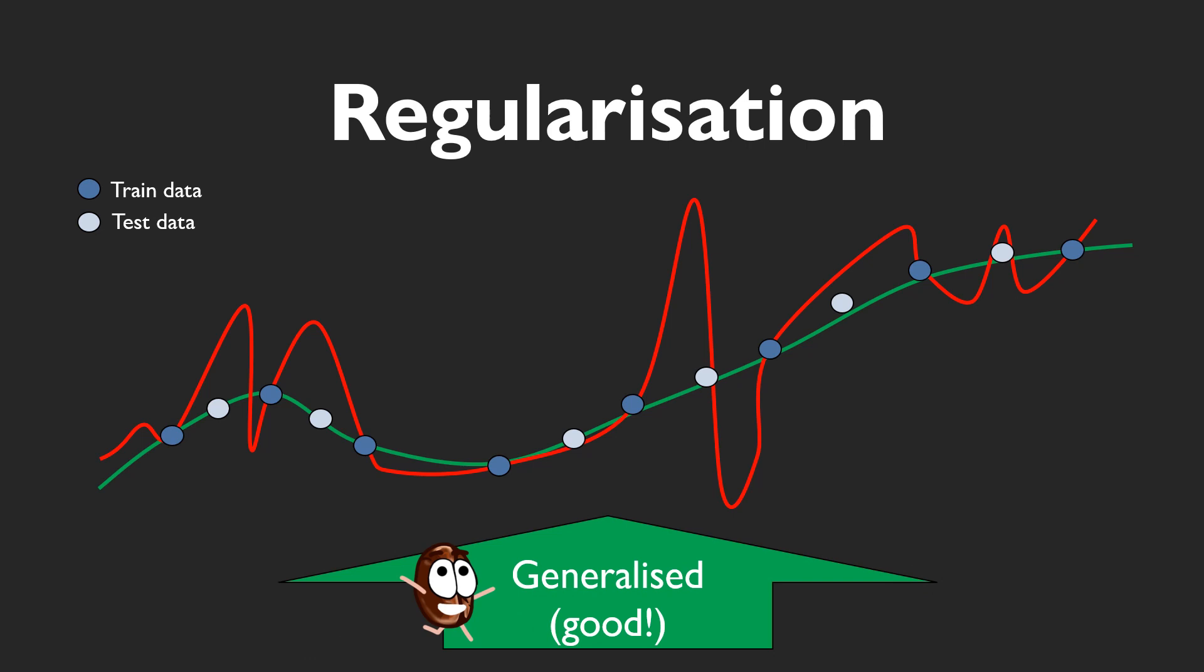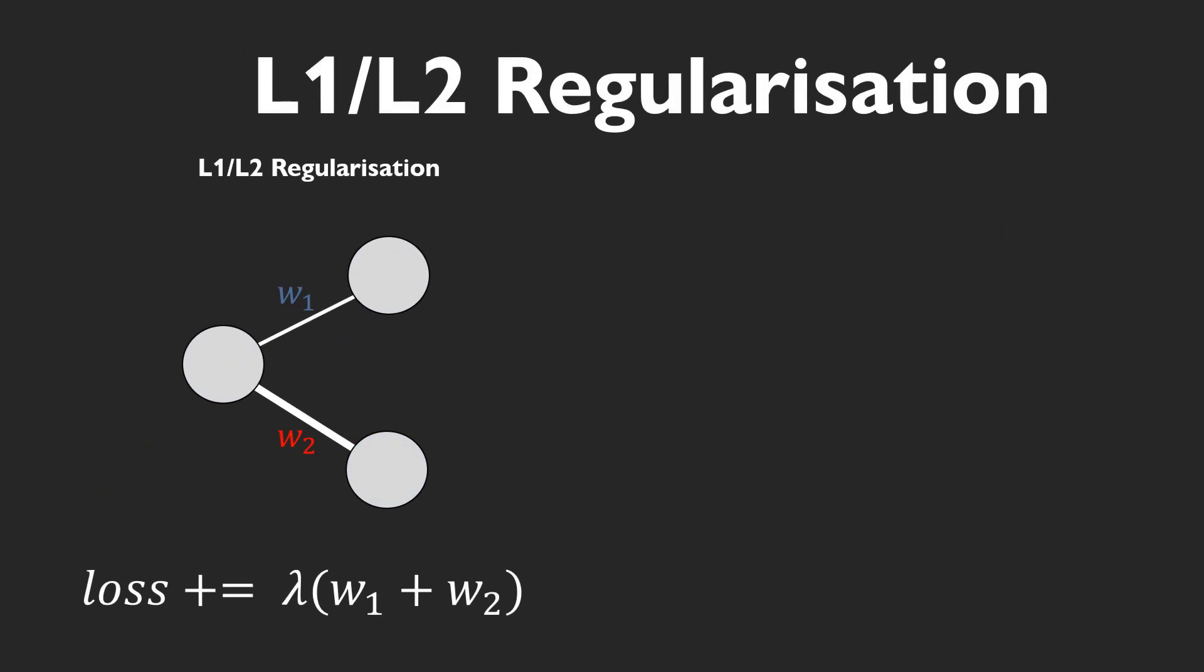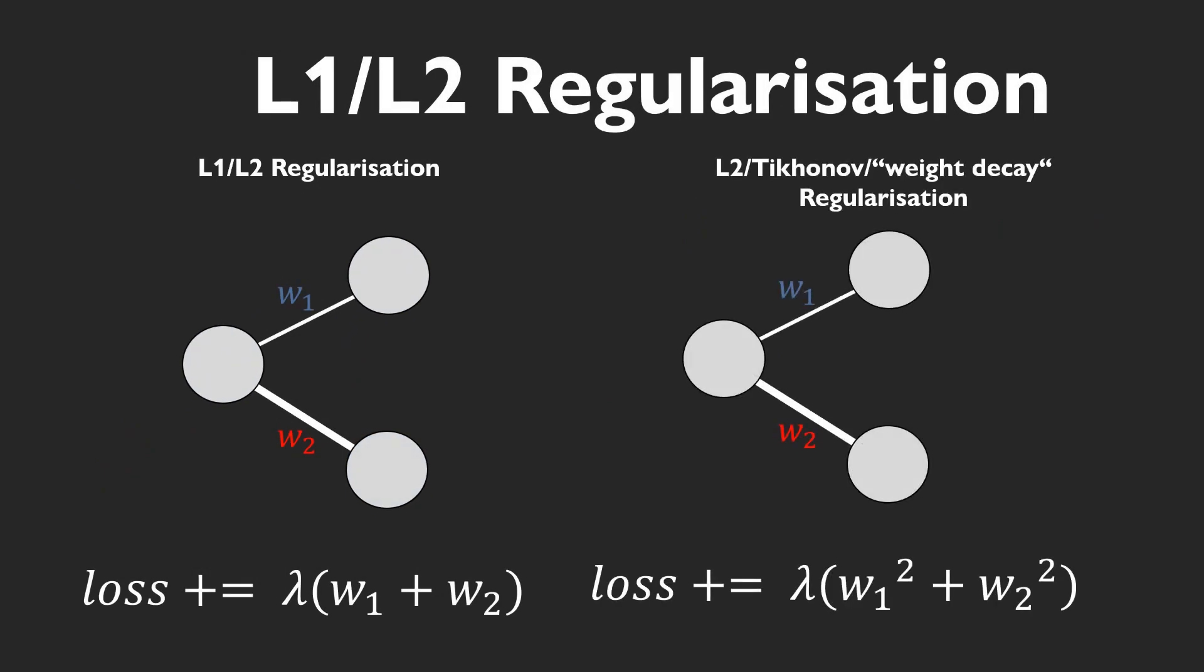Usually, these regularizations are added as an extra term to the loss function. So, two very common regularizations that are already built in in most optimizers such as Adam would be L1 and Tikhonov regularization that is also known as L2 or weight decay. L1 regularization just adds the absolute sum of all weights of the network to the loss term, whereas Tikhonov or L2 regularization does the same for the squared weights.